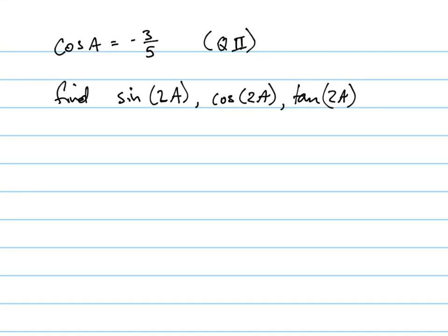All right, we're going to find sin 2a, cosine 2a, and tangent 2a, given that the cosine of a equals negative 3 fifths, and it terminates in quadrant 2.